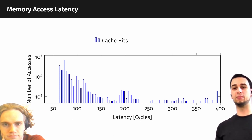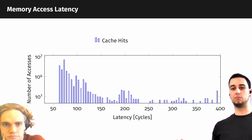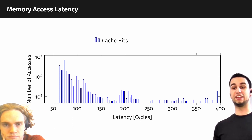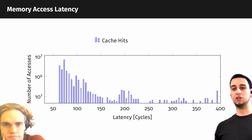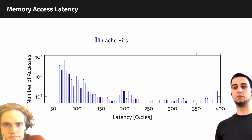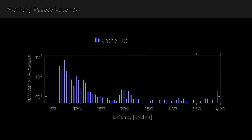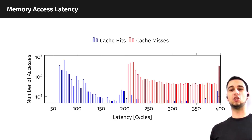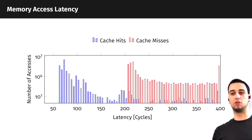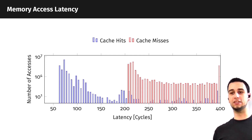We can clearly see that as timing differences — measuring access time gives us clear results. In this histogram, a cache hit shows timings around 60 cycles, while fetching from main memory is much slower, around 220-plus cycles, which we see in the red part.